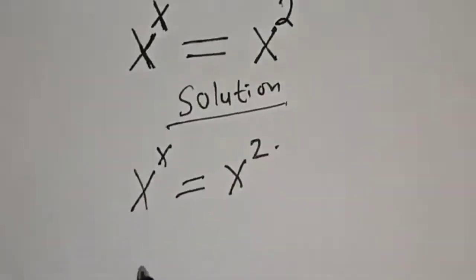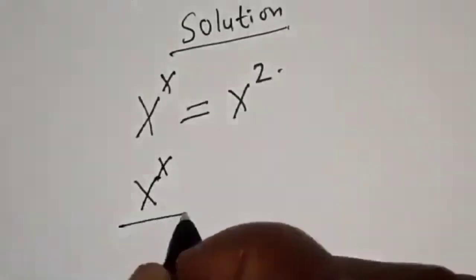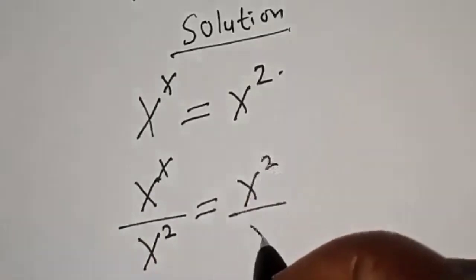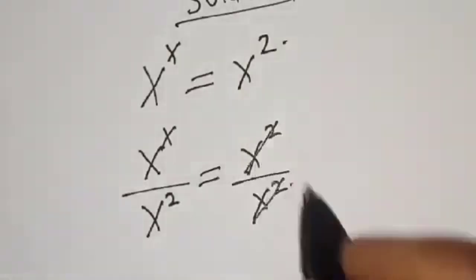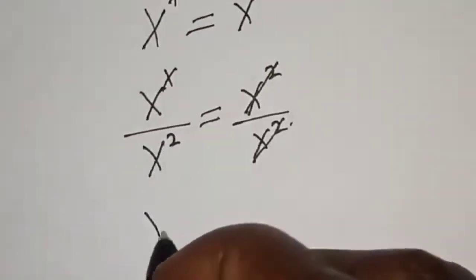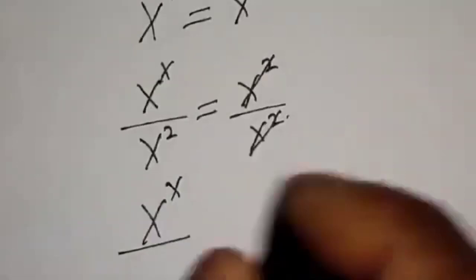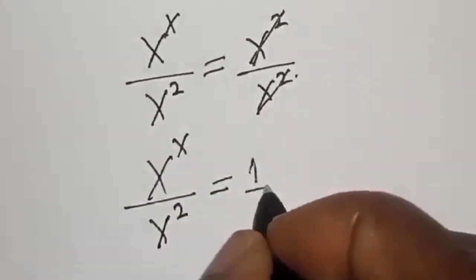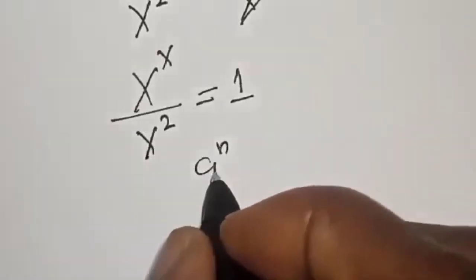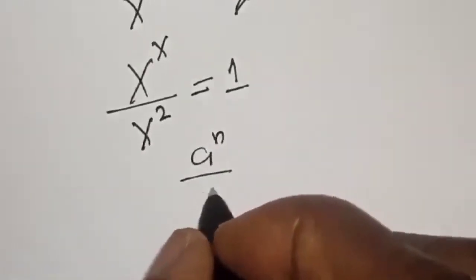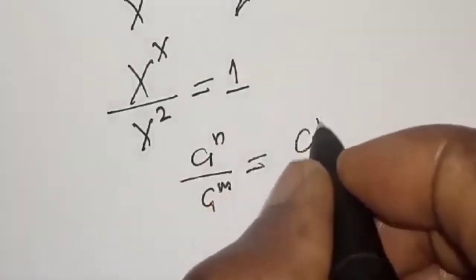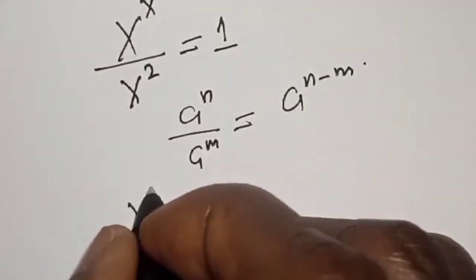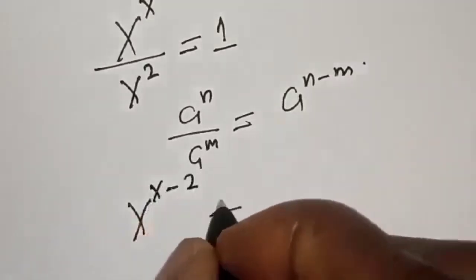Let's divide both sides by s squared. s raised to power s divided by s squared is equal to s squared divided by s squared — this cancels to 1. Using the exponent rule, a raised to power n over a raised to power m equals a raised to power n minus m, so the left-hand side becomes s raised to power s minus 2, equal to 1.